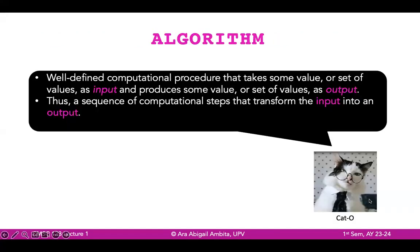Alright, so CATO has remembered, and according to CATO, an algorithm is a well-defined computational procedure that takes some value or set of values as input and produces some value or set of values as output. So in other words, we can say that an algorithm is a sequence of computational steps that transforms a certain input into a certain output.